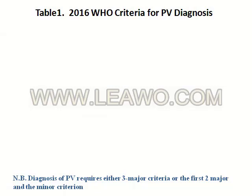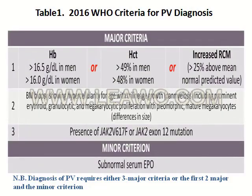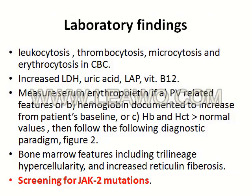This table shows the 2016 WHO criteria for polycythemia vera diagnosis. It has three major criteria and one minor criterion. To diagnose polycythemia vera, we require either all three major criteria, or two major and one minor criterion — the minor criterion being subnormal serum erythropoietin. Laboratory findings include leukocytosis, thrombocytosis, erythrocytosis on CBC, increased lactic dehydrogenase, elevated uric acid, and decreased serum erythropoietin. Bone marrow biopsy features include trilineage hypercellularity and increased reticulin fibrosis. Screening for mutations is also performed.